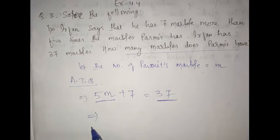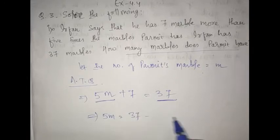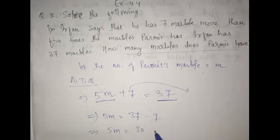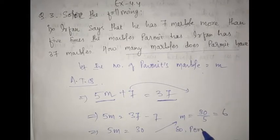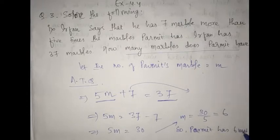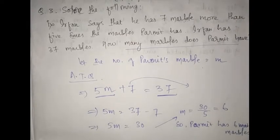I explained how to frame the equation in the previous class. Now, transposing 7: 5M equals 37 minus 7, which is 30. Then M equals 30 by 5, which is 6. So your answer is: Parmit has 6 marbles. I hope this is clear. Just try to understand the question, frame the equation, and solve it — it is just that simple.